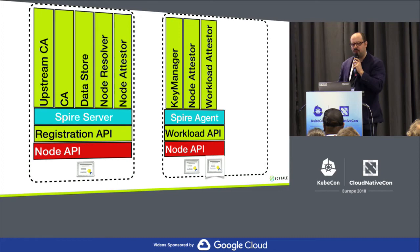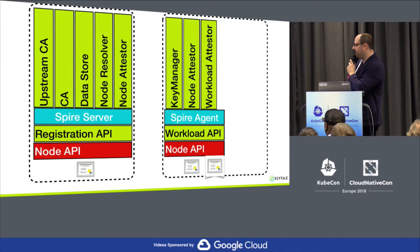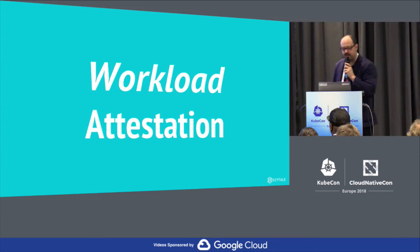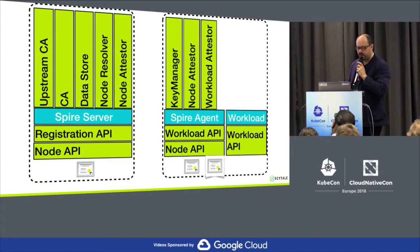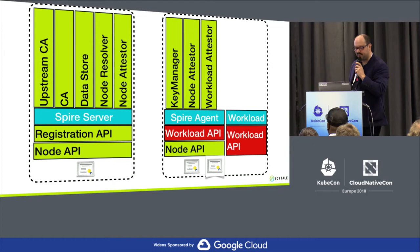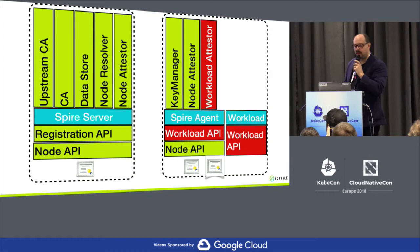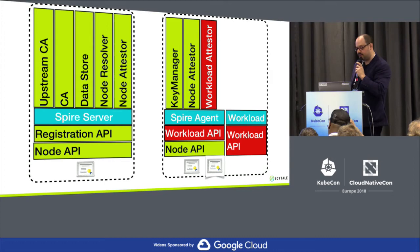When a workload comes up, it talks to a well-known endpoint for the workload API. The workload API attests the calling workload and determines if all the criteria in the attestation policy are satisfied. If everything is satisfied, it delivers the cert to that workload, and the workload has been assigned its identity.